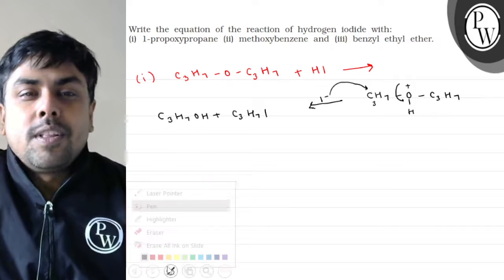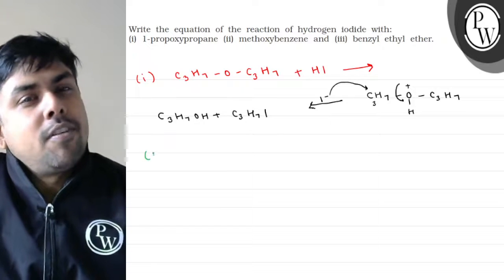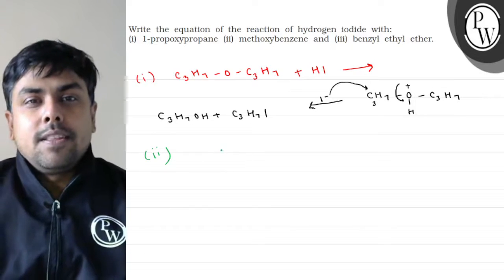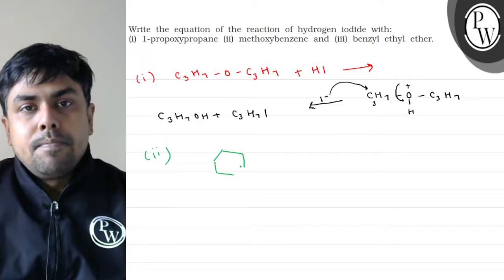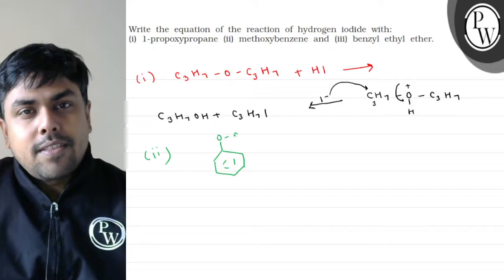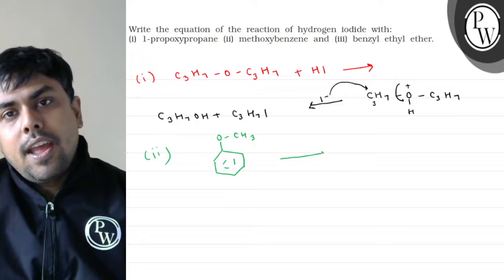Let's move to part 2 of this question, reaction 2. What is reaction 2? Methoxybenzene. I have methoxybenzene. If I draw the structure, is it something like this? And we treat this with HI.